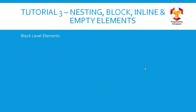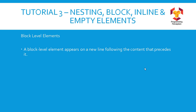The second variety is block level elements. A block level element appears on a new line following the content that precedes it. That means whenever you are using a block level element you are always going to get the output in a new line. Any content that follows a block level element also appears on a new line, so the elements preceding and the elements afterwards will all be in different lines.